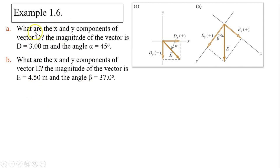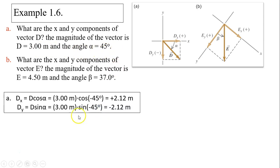Example 1.6. What are the x and y components of vector D? The magnitude of vector D is 3 meters and angle alpha is 45 degrees. So we use dx equals d cosine alpha, which is 3 times cosine negative 45. How did I get negative 45?